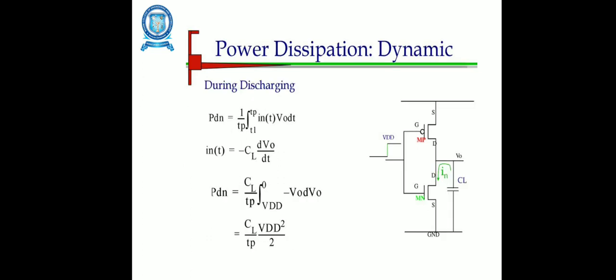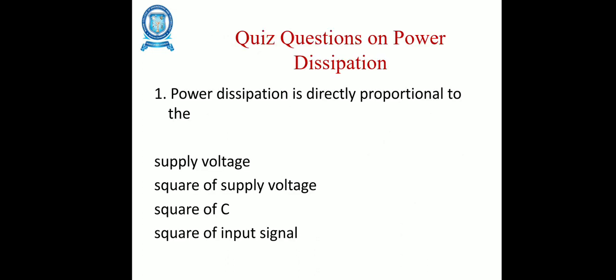During discharging, we know the NMOS is turned on and it is from VDD to ground. The final equation is VDN equals CL divided by Tp times VDD square divided by 2. Power dissipation is directly proportional to the supply voltage, square of the supply voltage, square of C, and square of input signal. Thank you.